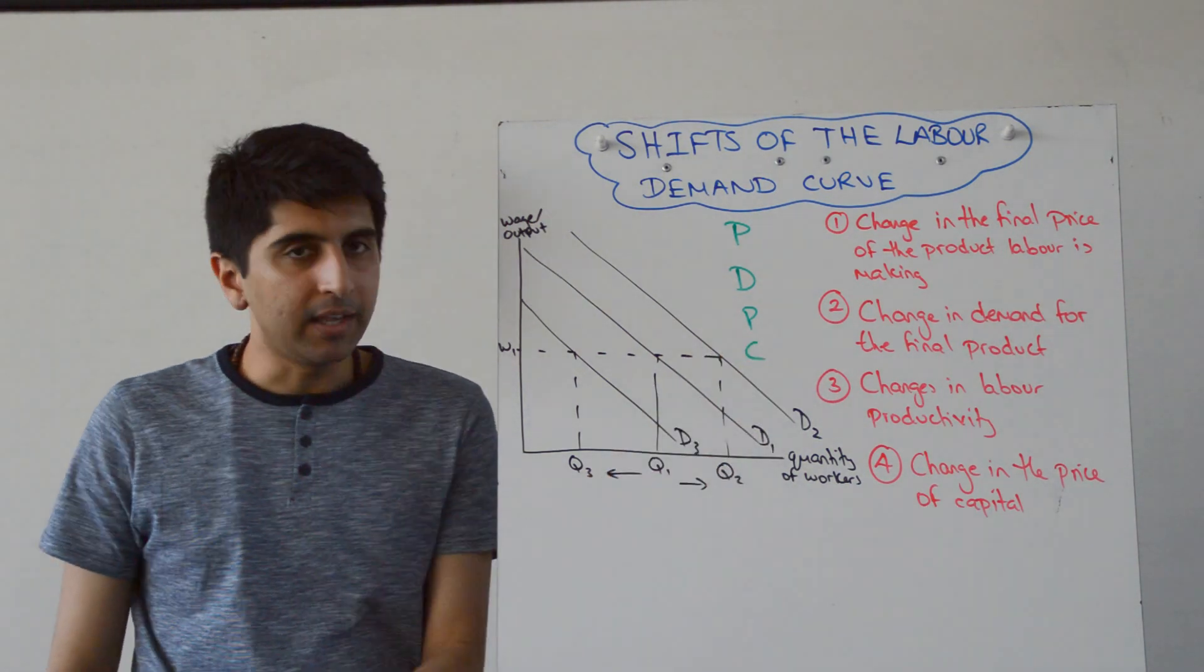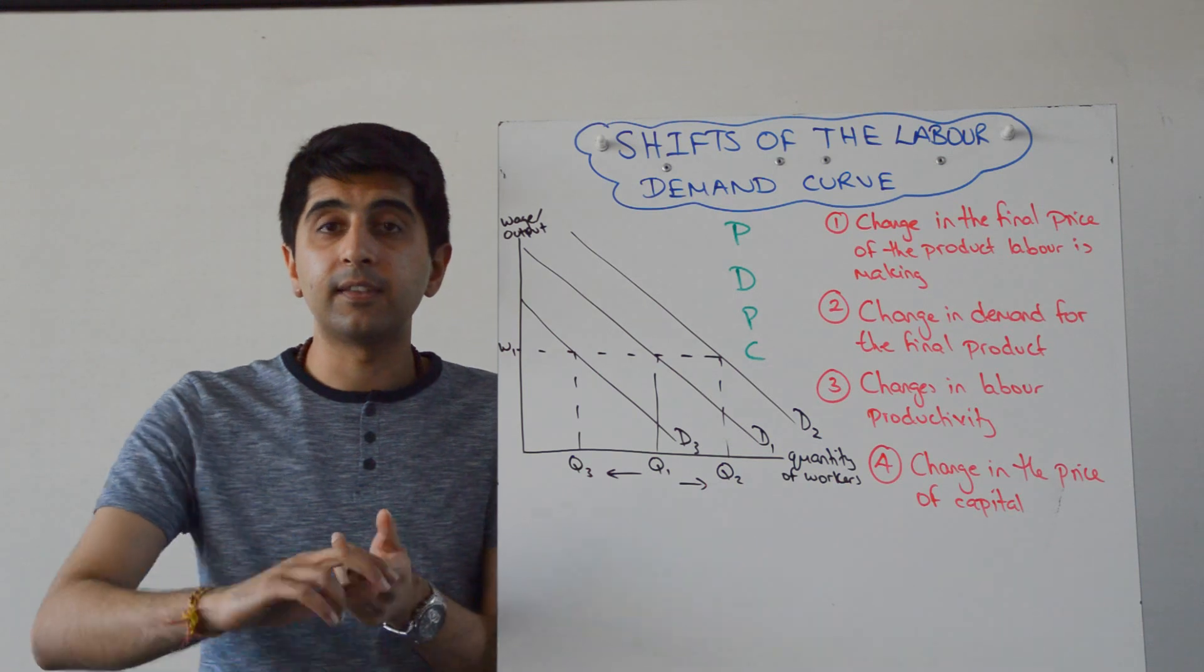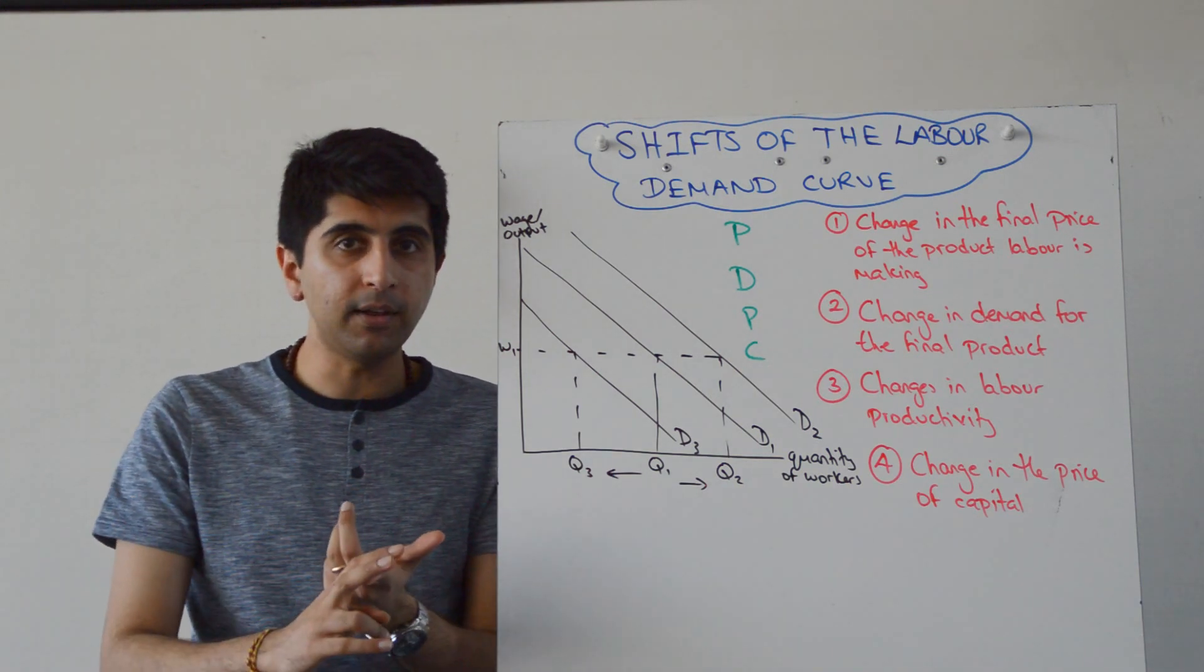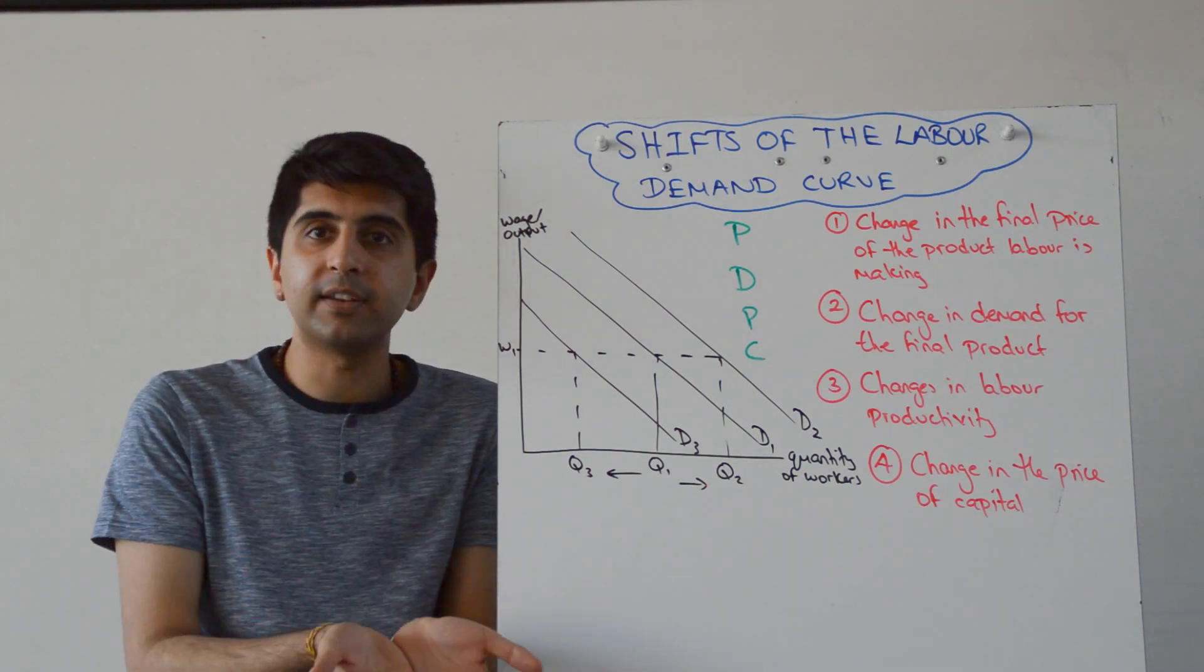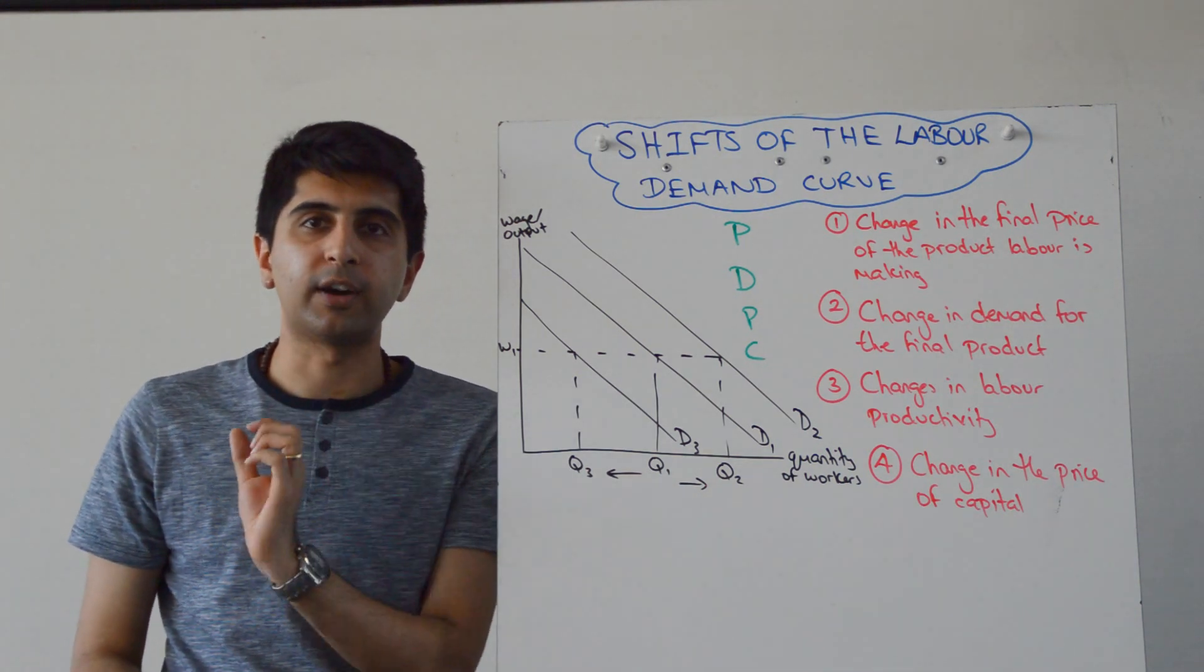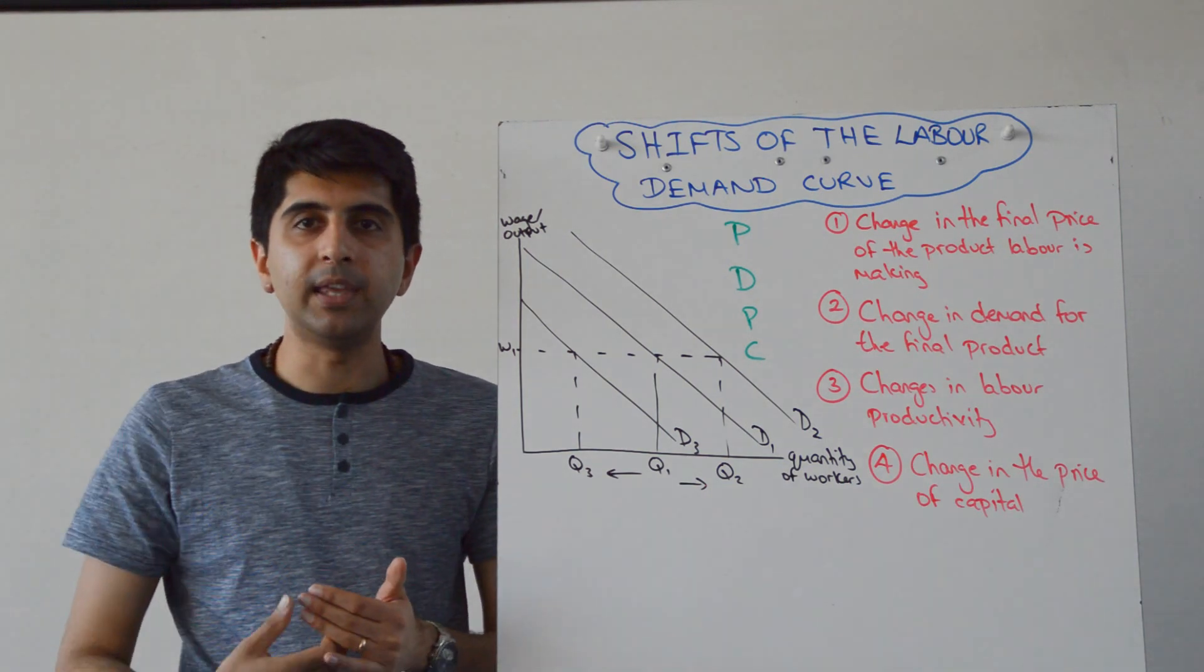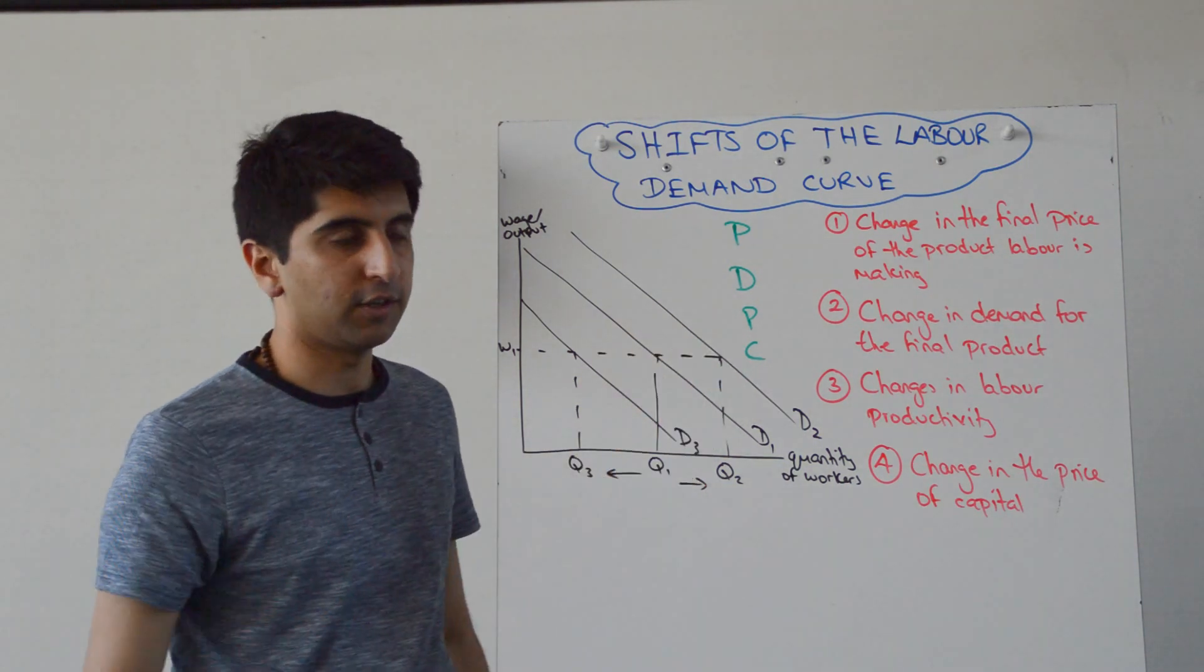The second P is a change in productivity. A change in labour productivity affects the marginal product of labour, and marginal product increases and therefore it affects the marginal revenue product. So an increase in labour productivity will increase MRP and shift the demand curve to the right.